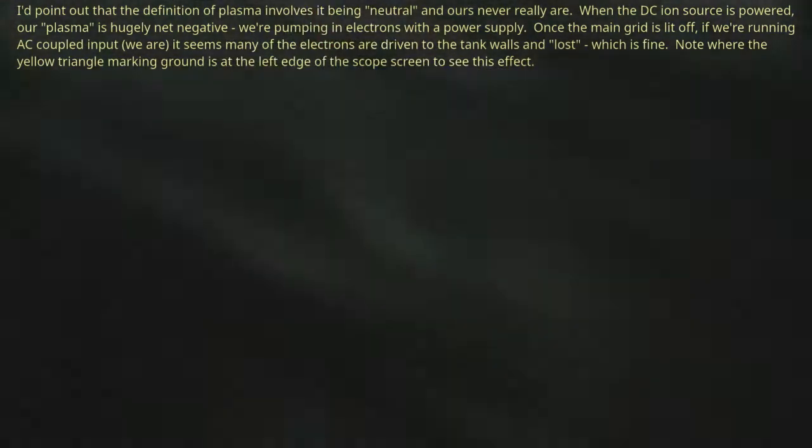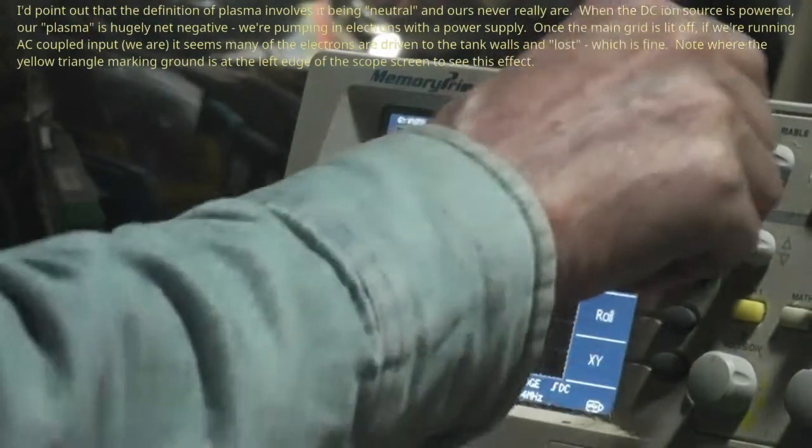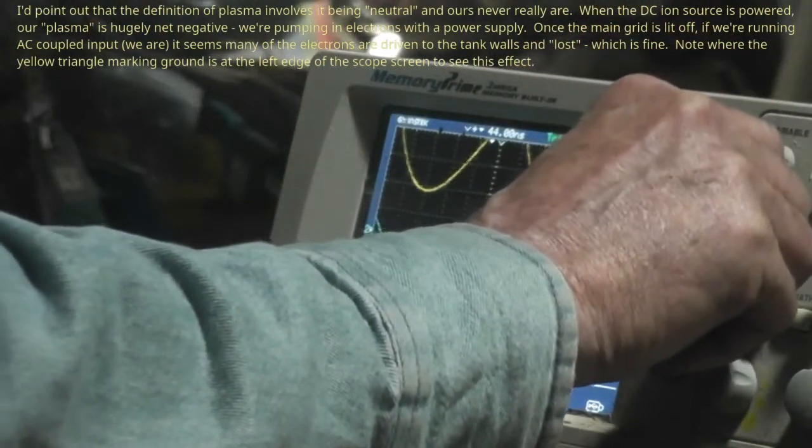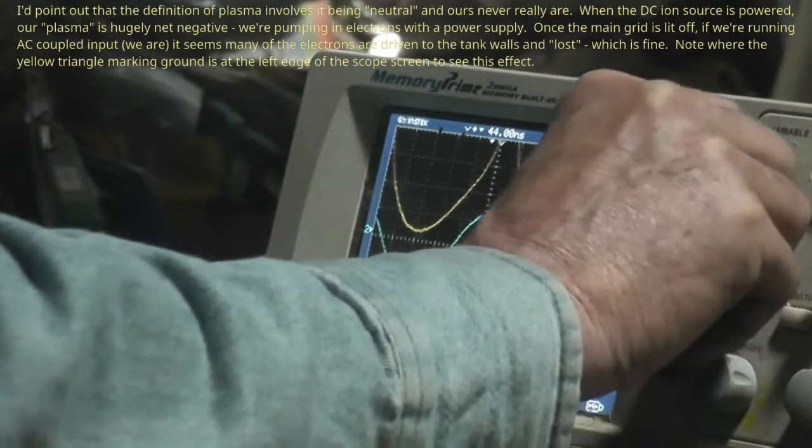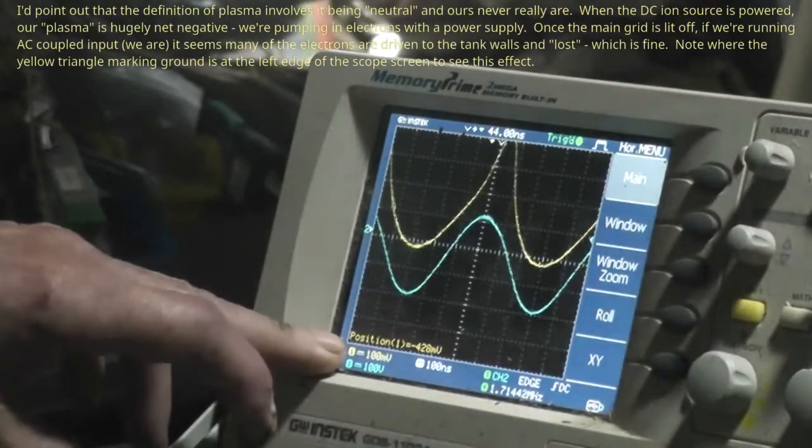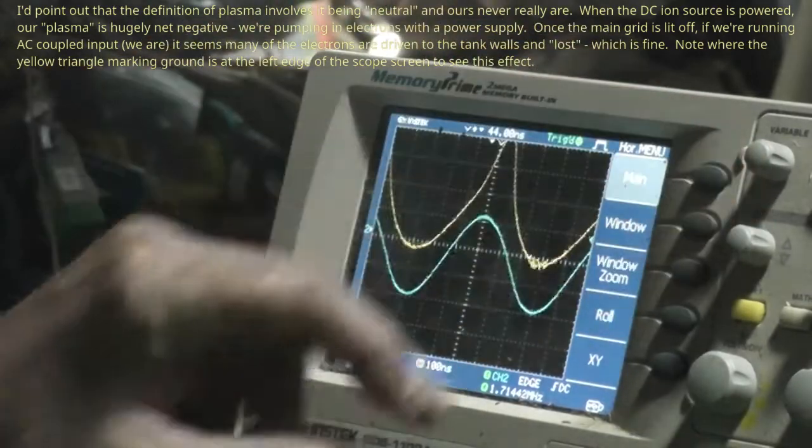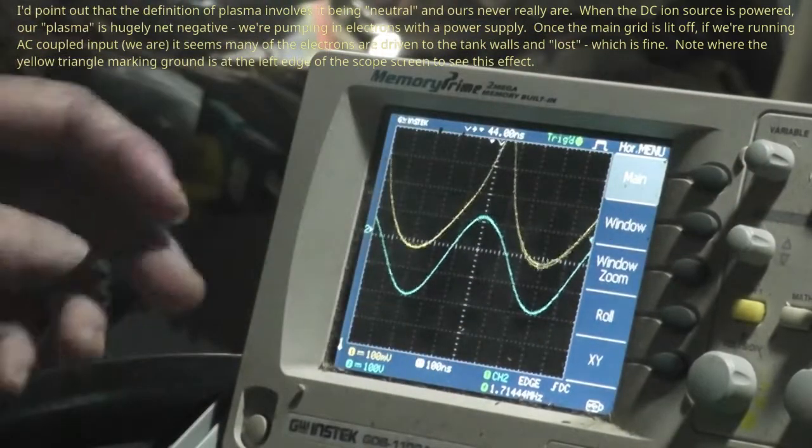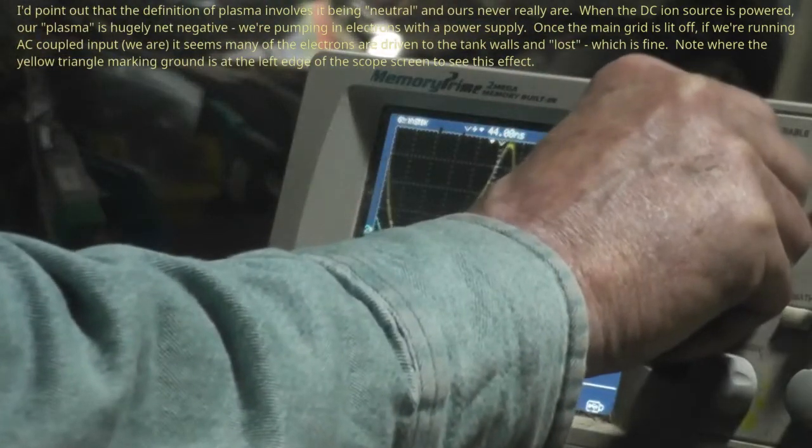And now suddenly, instead of our deeply negative positive that we normally have, we have one that's deeply positive. The zero for this thing is way the hell down here. By the way, the yellow trace is 100 millivolts per division. That's kind of an arbitrary unit.